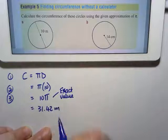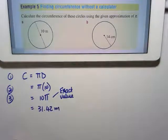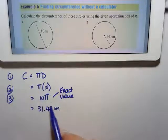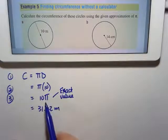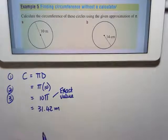So the circumference will be 31.42 meters. There's your three steps: formula, substitute the value in. If they say exact value, you're going to leave it in pi. If they don't say anything, you can either leave it in pi or you can write it as 31.42.